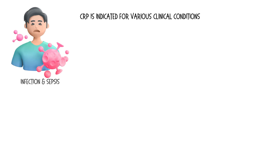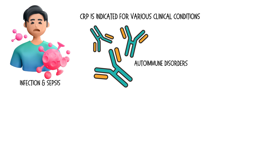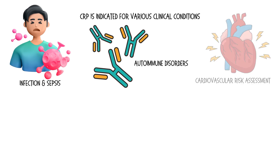CRP is indicated for various clinical conditions, including the following: infection and sepsis; autoimmune diseases such as rheumatoid arthritis, systemic lupus erythematosus, and inflammatory bowel disease to monitor disease activity.